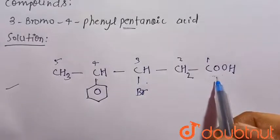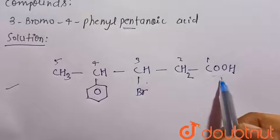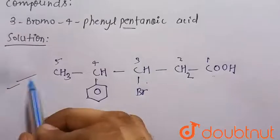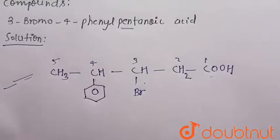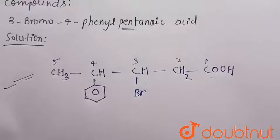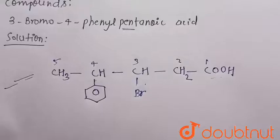The '-oic acid' suffix means it has a carboxylic acid group. So this is the required structure of the given compound, 3-bromo-4-phenyl-pentanoic acid. Thank you.